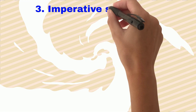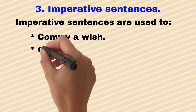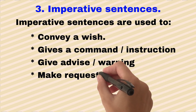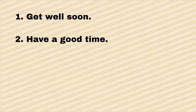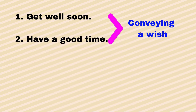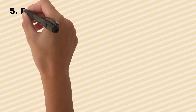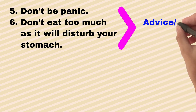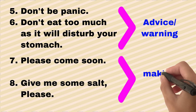Next is imperative sentences. Imperative sentences are used to convey a wish, give a command or instruction, give advice or warning, or make a request. They end with a period or exclamation mark. Examples: 'Get well soon' and 'Have a good time' convey a wish. 'Don't touch me' and 'Close the door' show command or instruction. 'Don't panic' and 'Don't eat too much as it will disturb your stomach' show advice or warning. 'Please come soon' and 'Give me some salt please' are making a request.